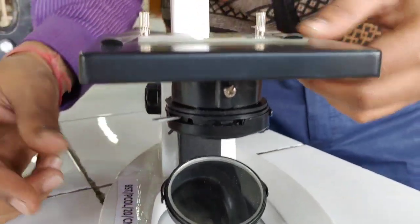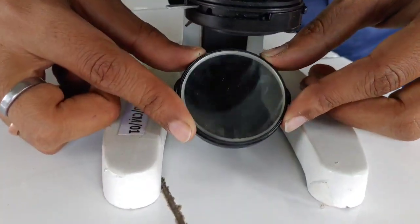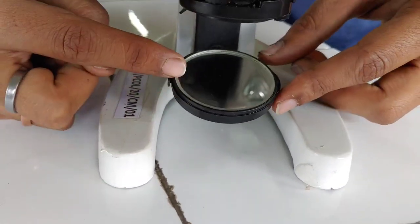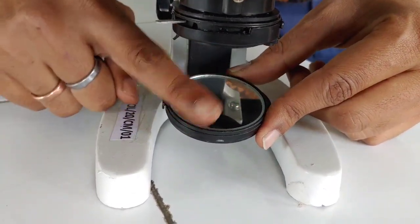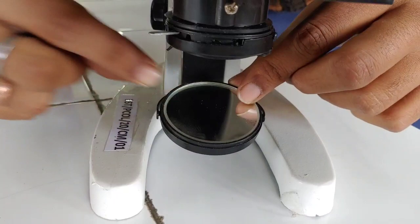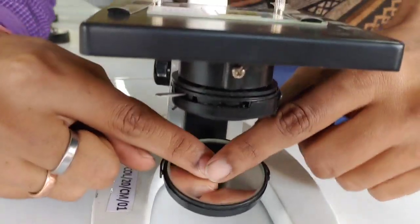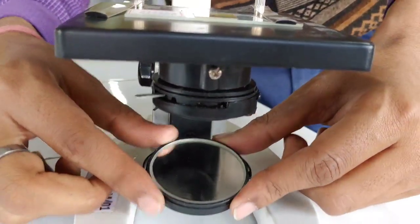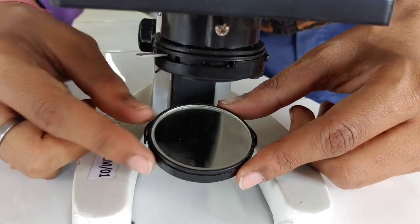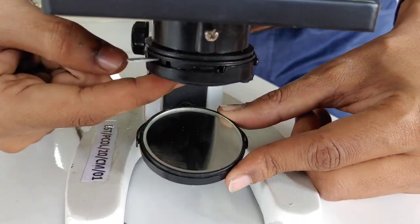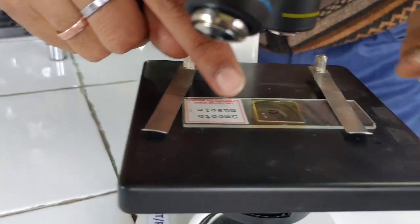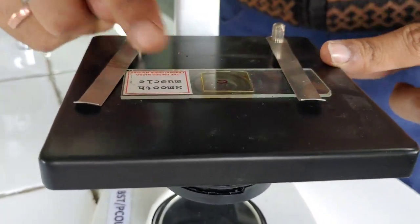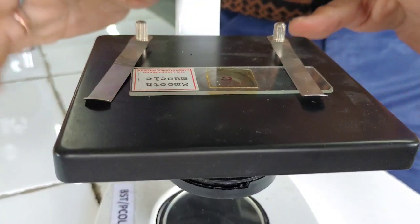Now, next is mirror. Mirror is double sided with one flat side and another one is concave side, which is present below the condenser. It focuses the light wave into a solid cone of light onto the specimen under study and help in resolving the image.